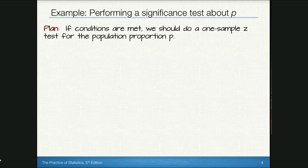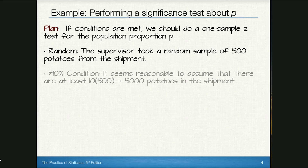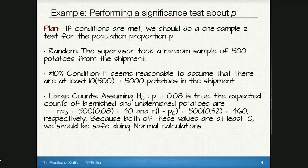Under the Plan step, we check our conditions. If met, we'll do a one-sample z-test for the population proportion p. For randomness: the supervisor took a random sample of 500 potatoes, so that condition is met. For the 10% condition: it seems reasonable to assume there are at least 5,000 potatoes in the shipment. For large counts: assuming the null is true, expected counts of blemished and unblemished potatoes are 40 and 460 respectively — both at least 10 — so we're safe doing normal calculations.